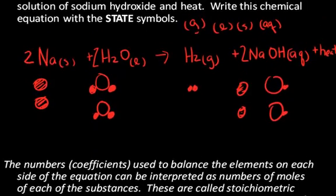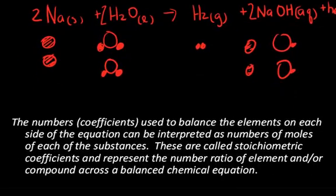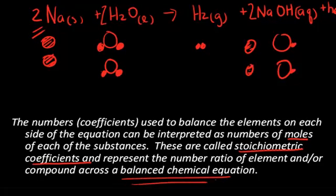So, the number of coefficients used to balance the elements on each side of the equation can be interpreted as the number of moles of each of the substances. These are called the stoichiometric coefficients, and represent the number ratio of element and or compound across a balanced chemical equation. This idea of the number ratio and the stoichiometric coefficients will be the subject of another video.